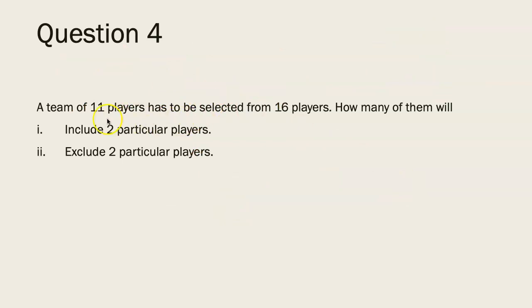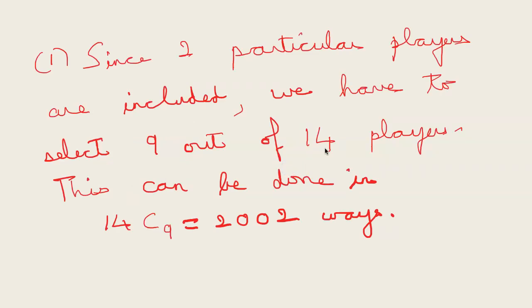Next question: A team of 11 players has to be selected from 16 players. How many of them will include 2 particular players and exclude 2 particular players? Since 2 particular players are included we are selecting 9 out of 14 players. And this can be done in 14C9 ways. That is 2002 ways.